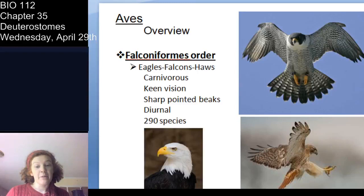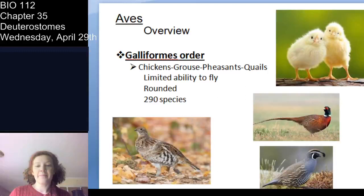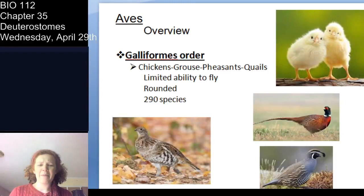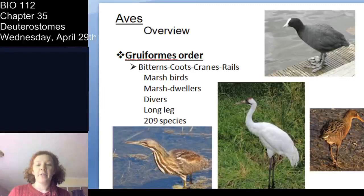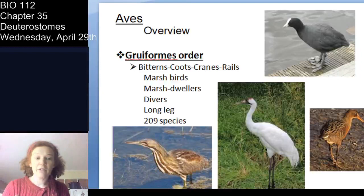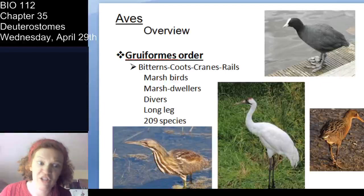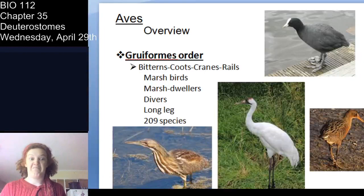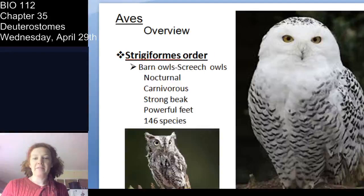There are other orders: Strigiformes are your birds of prey — carnivorous birds. Galliformes are your chickens and quails. Gruiformes are your marsh birds — cranes and rails. Rails are super cool; a friend of mine whose entire PhD was about rails discovered that they swim. Anseriformes are your other waterfowl — ducks, geese, and swans. And owls, which are just amazing.